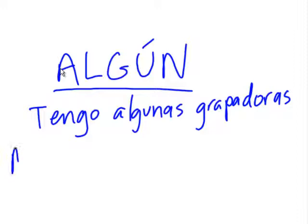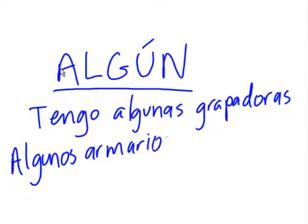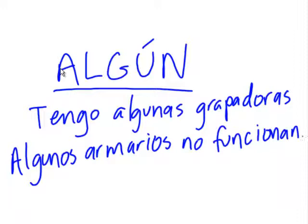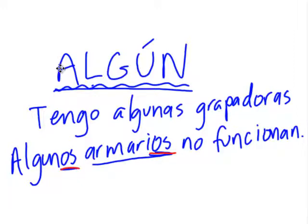Or we can say something like: Algunos armarios no funcionan — some lockers don't work. Notice it's masculine and plural, so this algunos is going to match in gender and number with the noun that it modifies. Since armarios is masculine and plural, this is masculine and plural. Since grapadoras is feminine and plural, algunas is going to be feminine and plural.